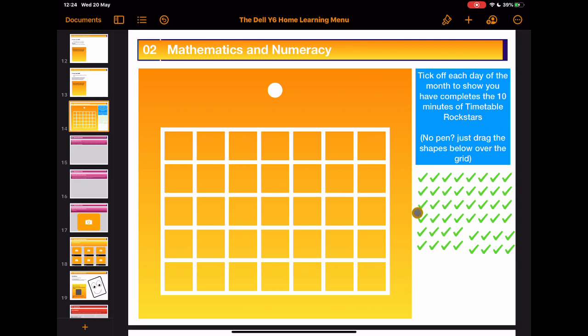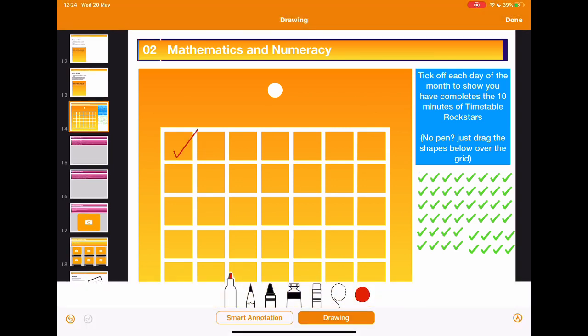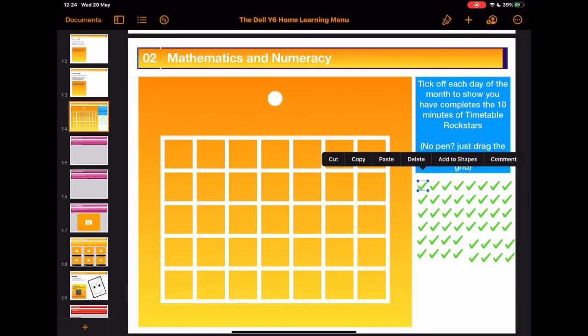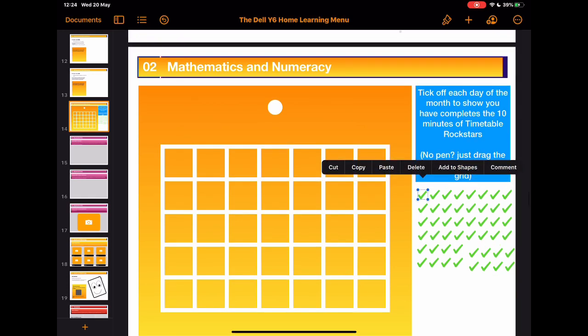They ask the students every day to spend about 10 minutes doing their Times Table Rock Stars. So I thought, how would they check how they're getting on with it? So I thought a couple of ways: if you've got an Apple Pencil, you can just tap on the screen and tick in the boxes. If you don't have an Apple Pencil, you can just tap over here and I've just created some ticks that you can just take and drag over onto the page just to highlight that you've done it that day.